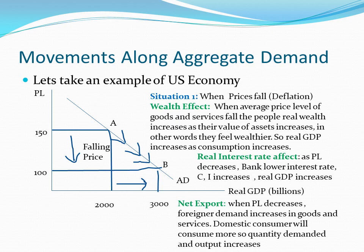The next effect in the deflation situation is net exports. When the price level decreases from 150 to 100, foreign demand increases for domestic goods and services, so domestic consumers and foreigners will consume more. Quantity demanded and output increases from 2000 to 3000 billion dollars, from point A to point B. This situation is called movement along the aggregate demand curve.